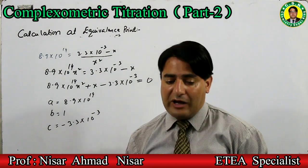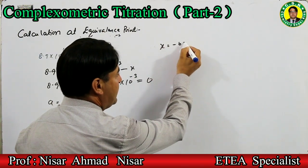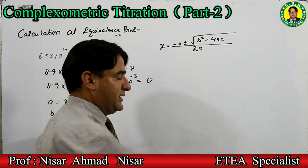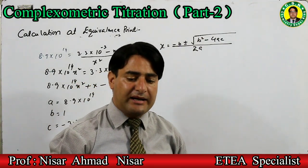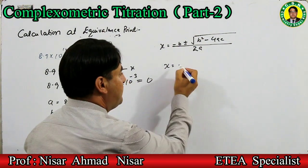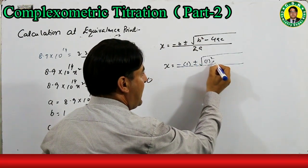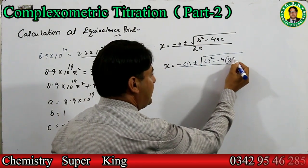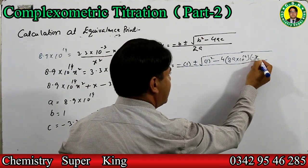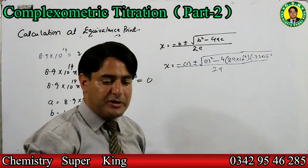Quadratic formula: x = (−b ± √(b² − 4ac)) ÷ 2a۔ Values put کریں: b = 1، a = 4.9×10¹⁴، c = −3.3×10⁻³۔ x = (−1 ± √(1 − 4 × 4.9×10¹⁴ × (−3.3×10⁻³))) ÷ (2 × 4.9×10¹⁴)۔